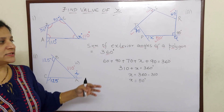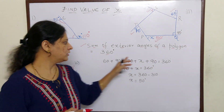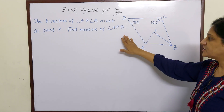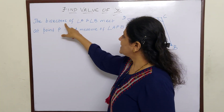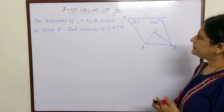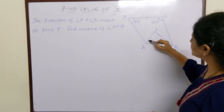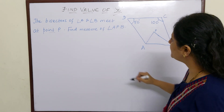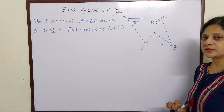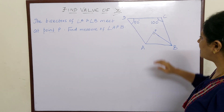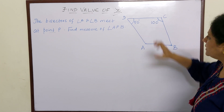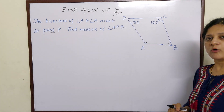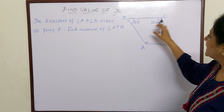So it is very easy if you know that the sum of exterior angles of a polygon is 360. Now let us go to the last sum. They have told us that the bisectors of angle A and angle B meet at point P. That means this is the bisector of A and this is the bisector of B, and they meet at point P. Find the measure of angle APB. Now this figure is in the shape of a quadrilateral, and the sum of angles of a quadrilateral is 360.